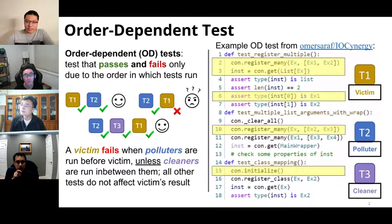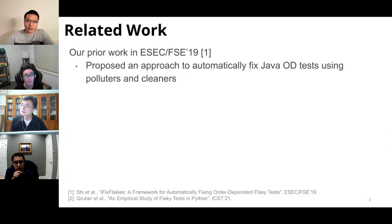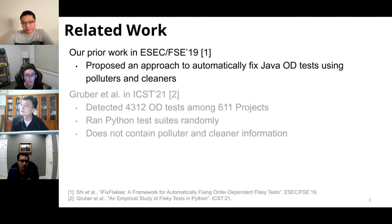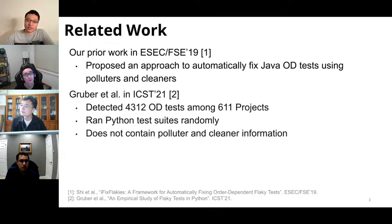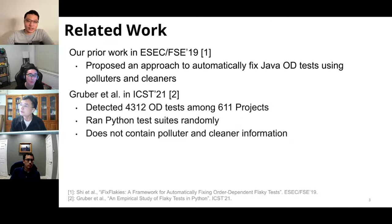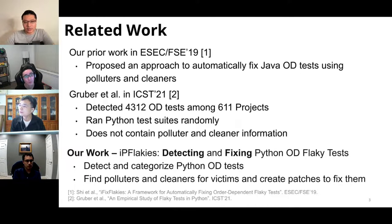We refer to these three test types as victim, polluter, and cleaner. A victim fails when run directly after the polluter, unless cleaners are run in between them. Related work from 2019 proposed an approach to automatically fix Java order-dependent tests using polluters and cleaners. More recently, Gruber et al. proposed a dataset detecting 4,312 order-dependent tests among more than 600 Python open-source projects, but the polluter and cleaner information was missing from that dataset.